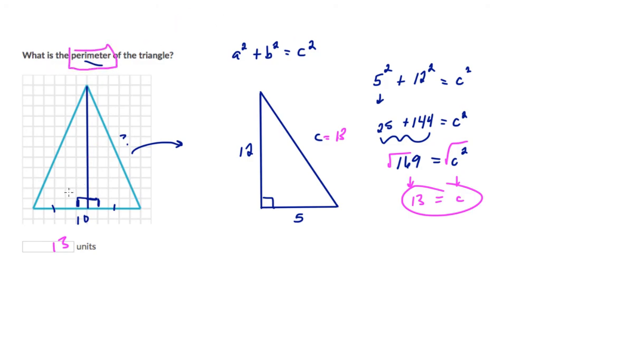So the missing side length or c is 13. Now that doesn't mean the answer is 13. Remember, our goal is to find the perimeter of this shape, which requires us to add up all the sides. But that did help us because now we know that this side is worth 13 and that this side is also 13. So to find the perimeter of this, we'll do 13 plus 13, which is 26, plus 10, so this triangle has a total perimeter of 36 units.